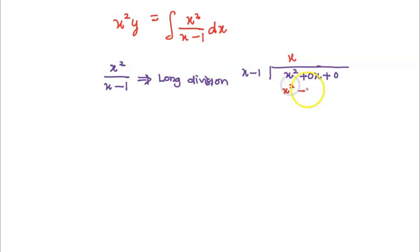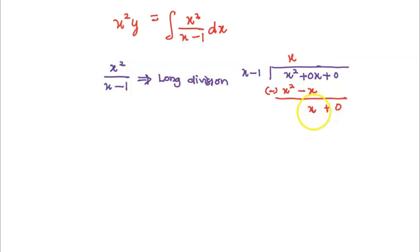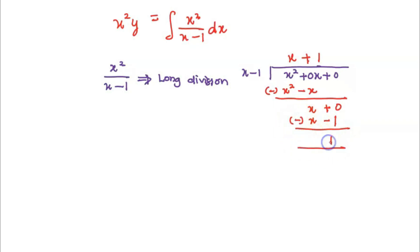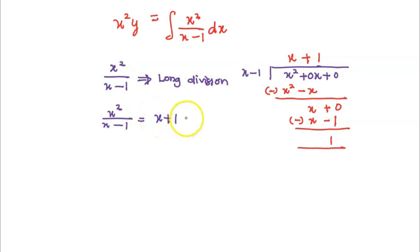When we subtract, x squared minus x gives 0, and 0x minus negative x becomes positive x. Positive x combined with our divisor x minus 1 requires plus 1 as the next quotient term. Then 1 times x minus 1 gives x minus 1, and subtracting gives remainder 1. So x squared over x minus 1 can be written as the quotient x plus 1, plus remainder 1 over divisor x minus 1.